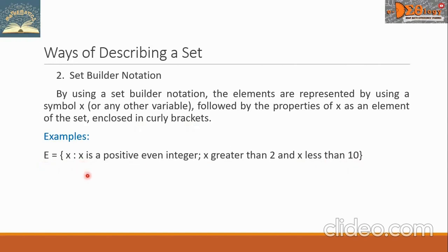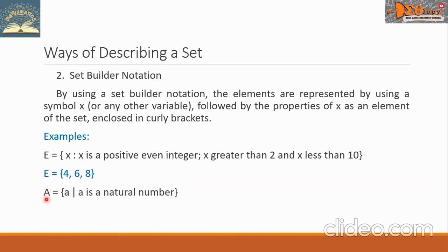If we write set E by listing method, we will have set E equals {4, 6, and 8}. Another example is set A, whose elements are variable A such that A is a natural number. Writing set A by listing method, we get A equals {1, 2, 3, and so on}.